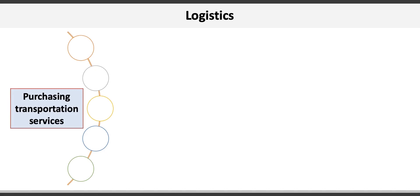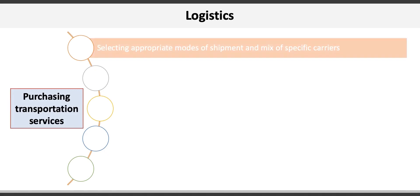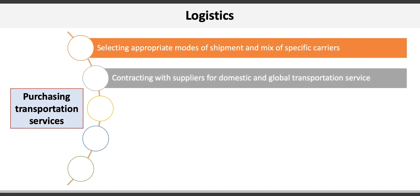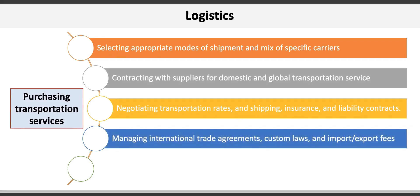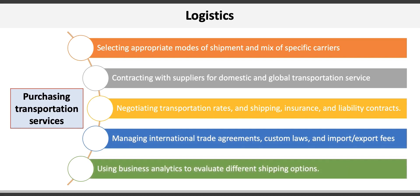Logistics managers have two primary responsibilities. The first is purchasing transportation services, which can include selecting appropriate modes of shipping and a mix of specific carriers, contracting with suppliers for domestic and global transportation services, negotiating transportation rates and shipping insurance and liability contracts, managing international trade agreements, customs laws, and import or export fees, and using business analytics to evaluate different shipping options.